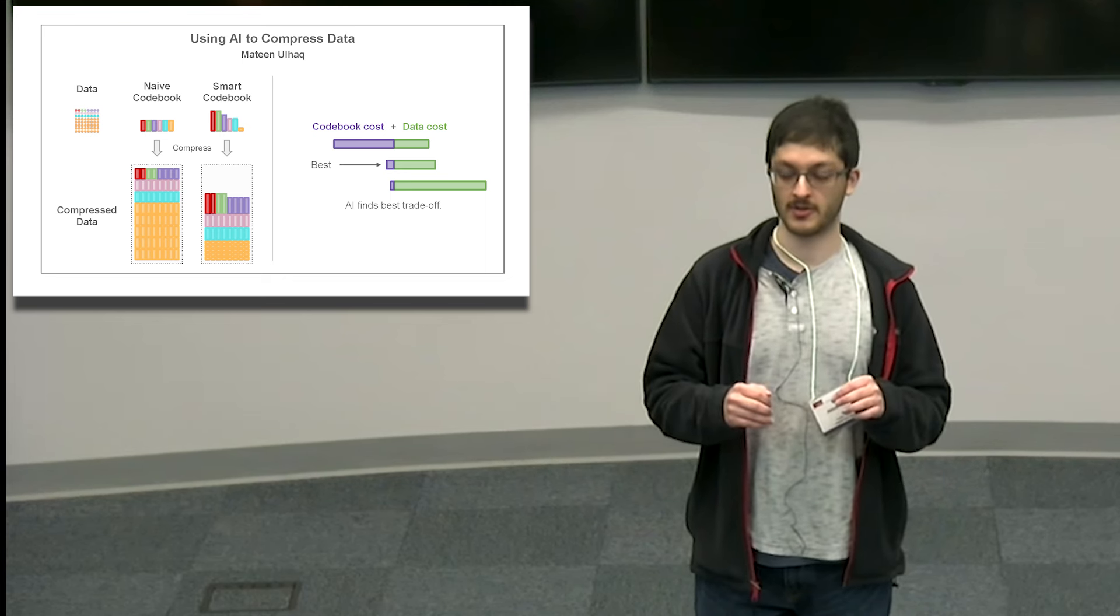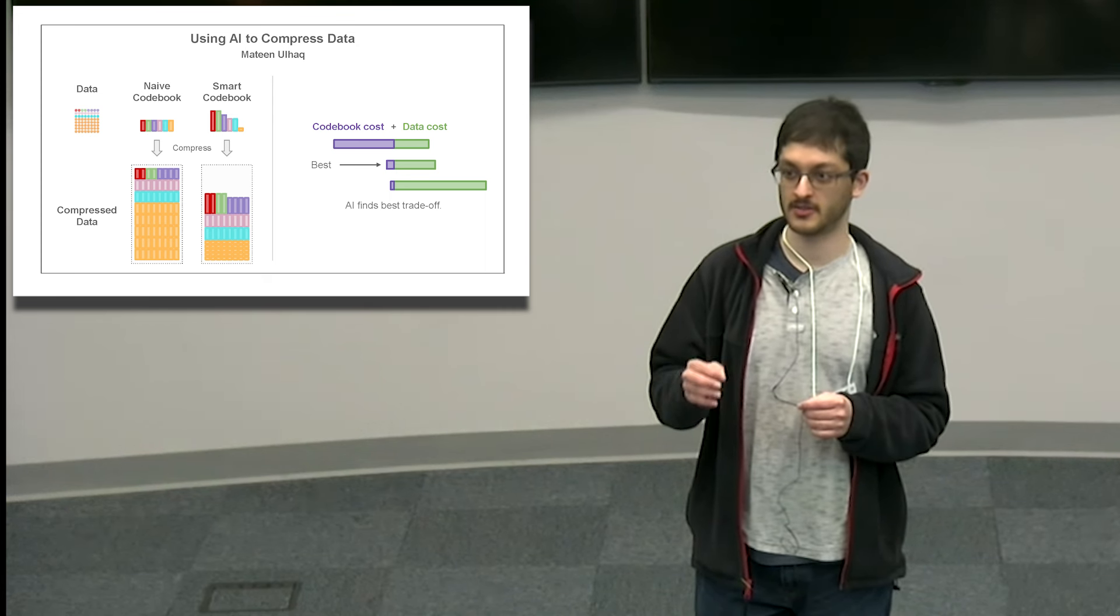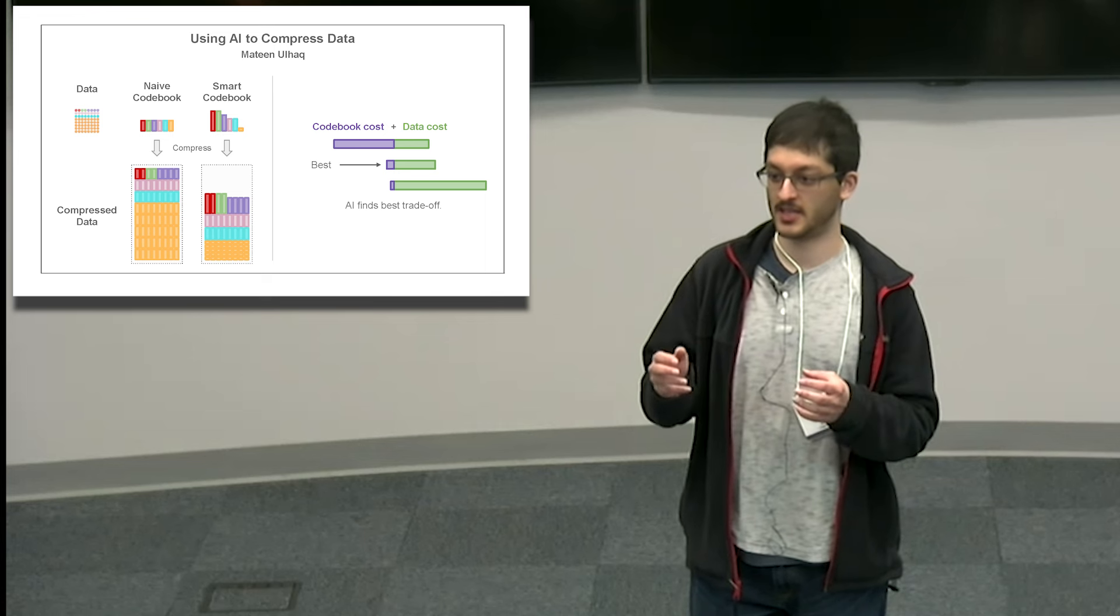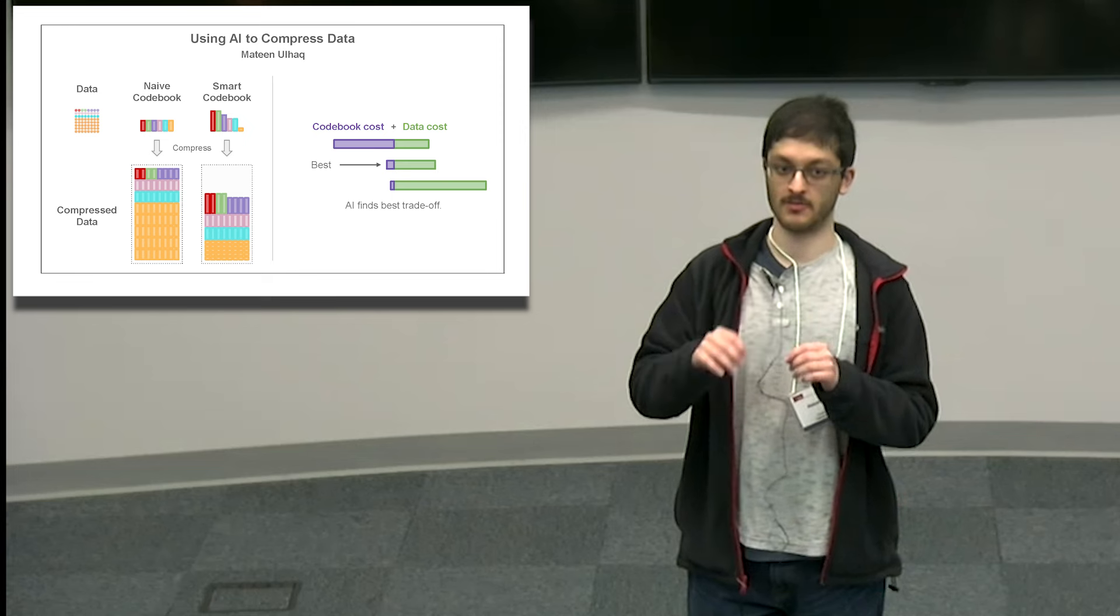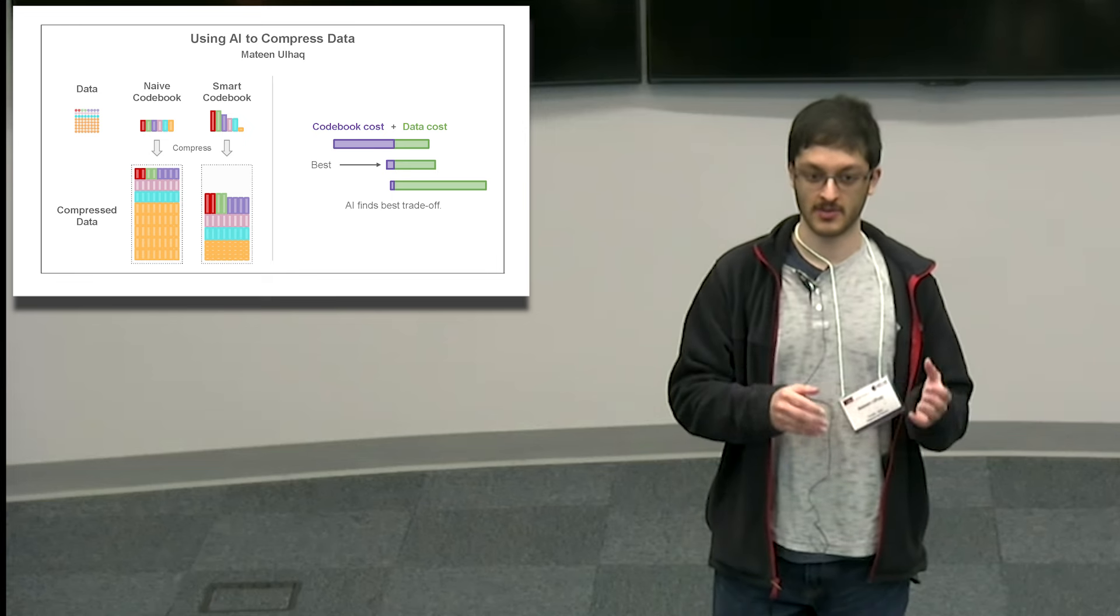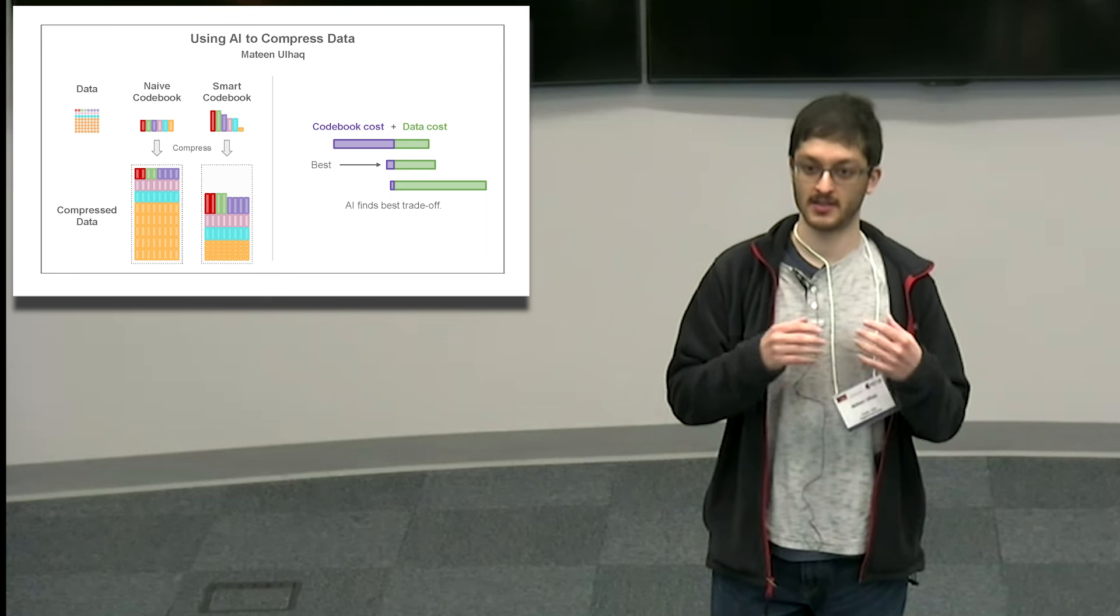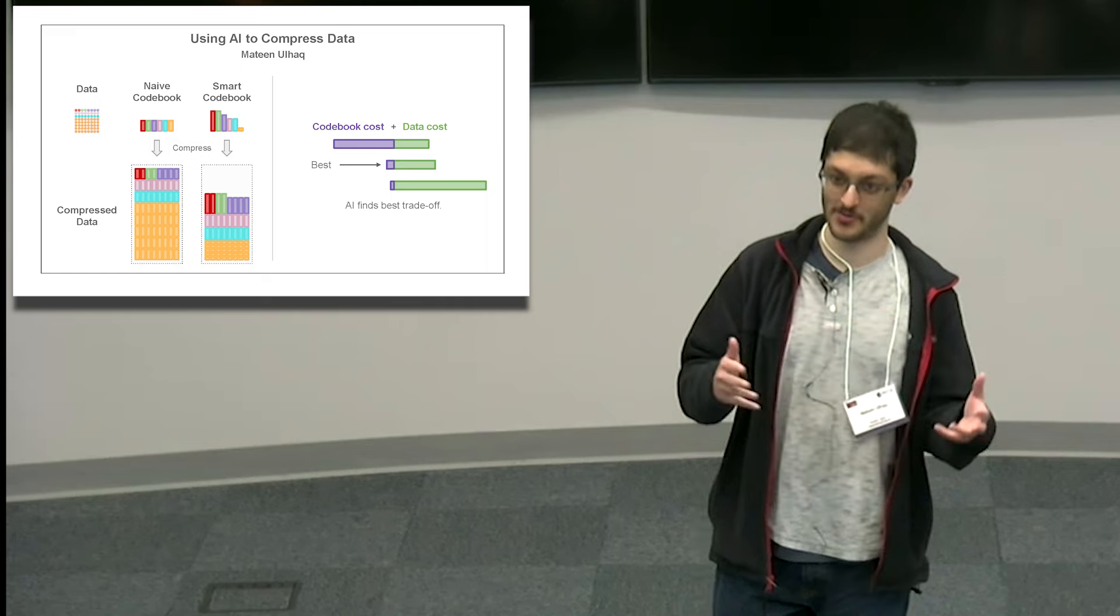We also have to store something called a codebook. The codebook is like a glossary. It allows us to figure out what each abbreviation means. So the letter T, for example—we will write in the codebook that the letter T corresponds to 'the,' and similarly for other words. This codebook is quite useful for a reader to be able to figure out what you wrote down.